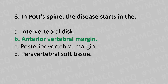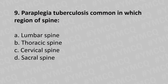Moving to our ninth question: Pott's paraplegia tuberculosis is most common in which region of the spine — option A lumbar spine, option B thoracic spine, option C cervical spine, option D sacral spine. And the answer is option B thoracic spine.